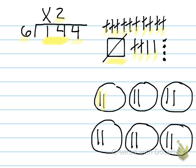2 times 6 is 12 — that's how many tens we used. So 2 times 6 is 12. You subtract it because that's how many you used. 4 minus 2 is 2, 1 minus 1 is 0. Now we have 2 tens left over, and 2 tens left over here in the picture. Perfect.